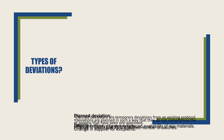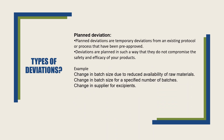Now we will discuss the types of deviation. There are two types: planned and unplanned deviations. Planned deviations are temporary deviations from an existing protocol or process that have been pre-approved. Planned deviations are managed so that they do not compromise the safety and efficacy of your products. They should be evaluated by a cross-functional team and QA to ensure there is no impact on product quality and thereby patient safety.